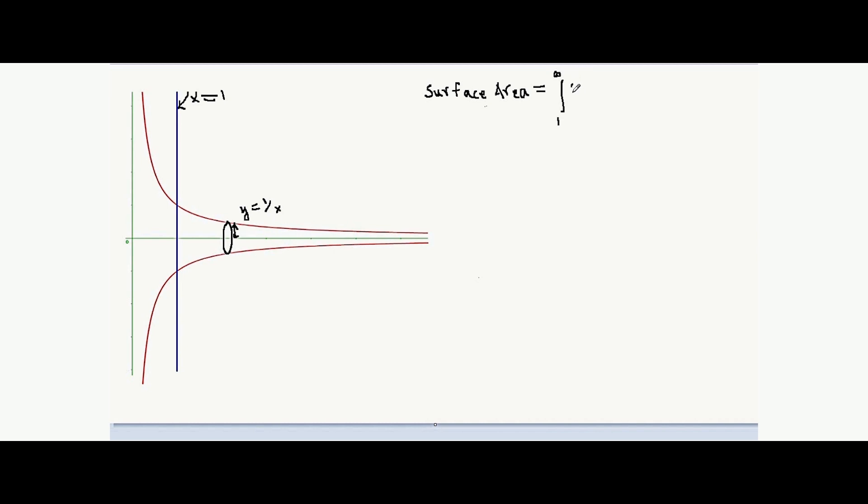So our elemental surface areas become equal to 2π into 1 over x dl where dl is the elemental length along the curve y equal to 1 by x. So drawing a magnified view over here, the elemental length along x will be equal to dx and that along y will be dy for an elemental length dl along the curve. So using Pythagoras theorem,